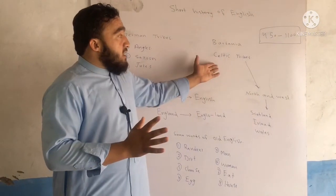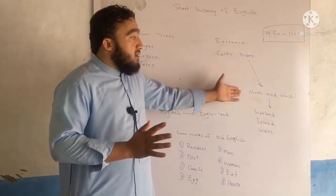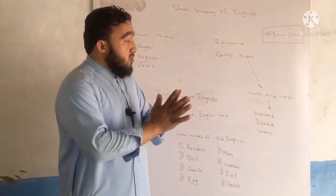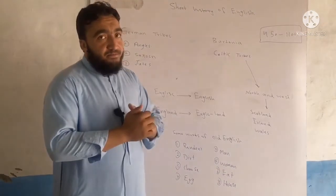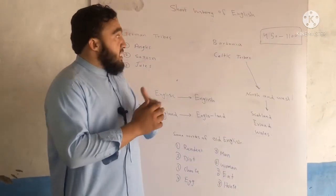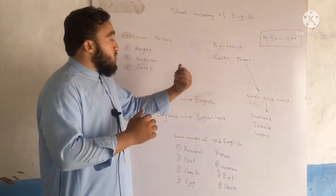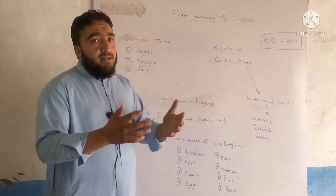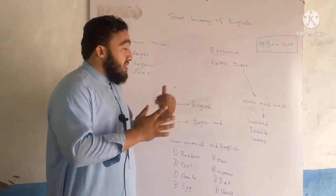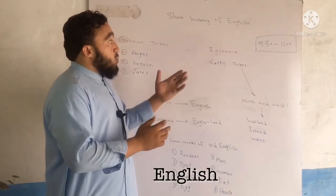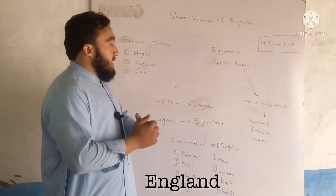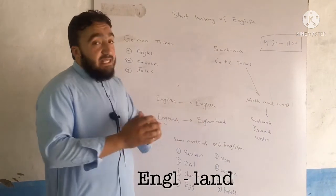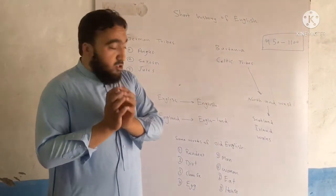Now, there are some people who are from the world, and we are from the North West. In this country, there are two countries: Scotland and England. They are from the world of England. At the end of the world, the English is the English. There are two countries in the world of England.